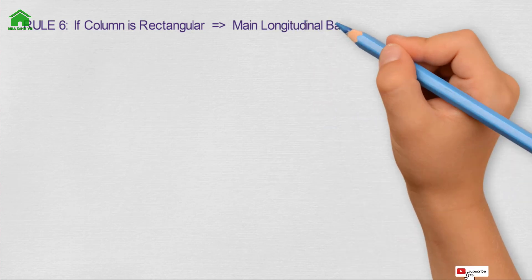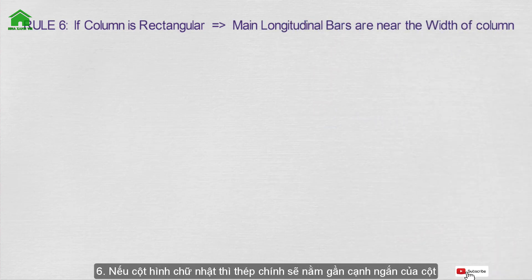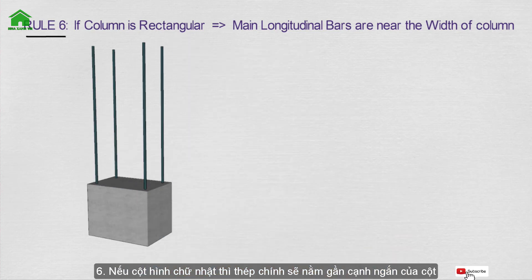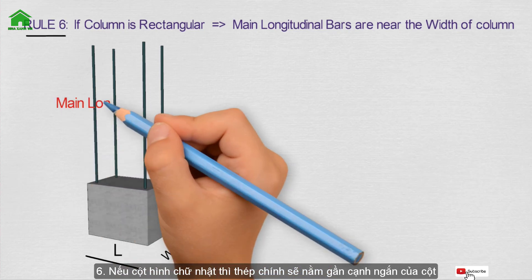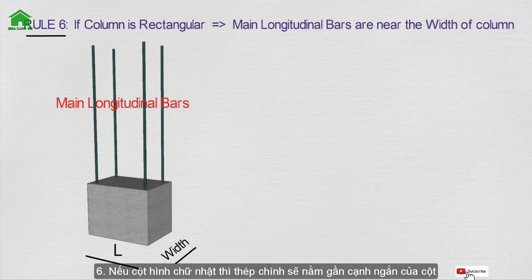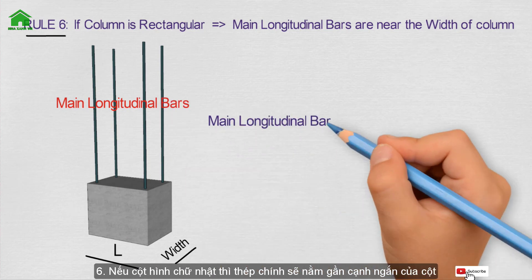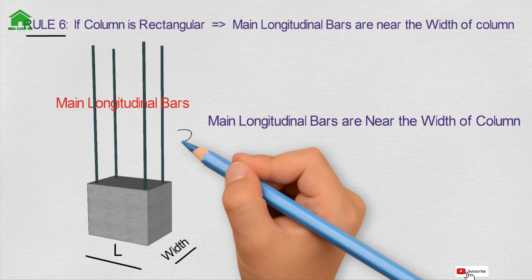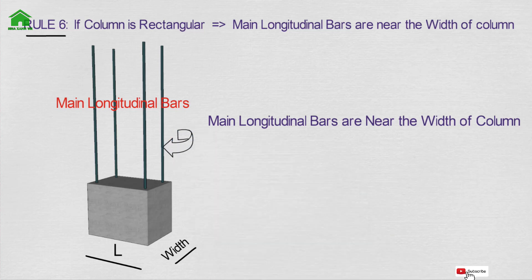Rule number six: if the column is rectangular, the main longitudinal bars should be placed near the width of the column section. This is the length and this is the width of the column section, and the main longitudinal bars are positioned near the width.